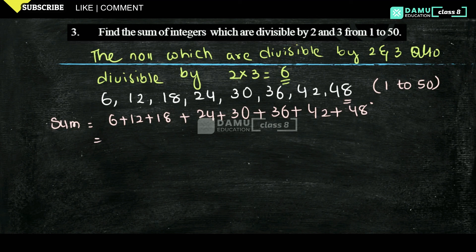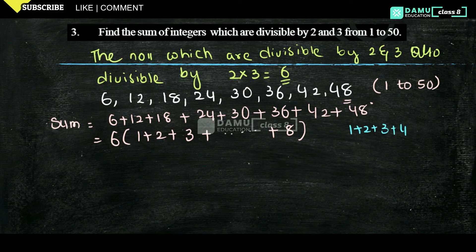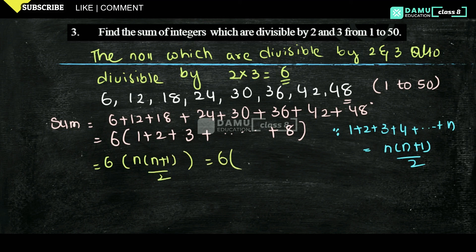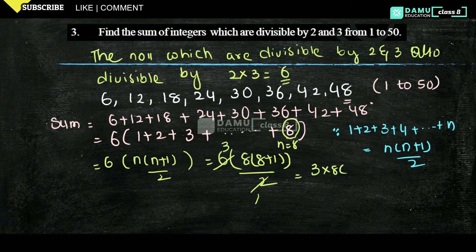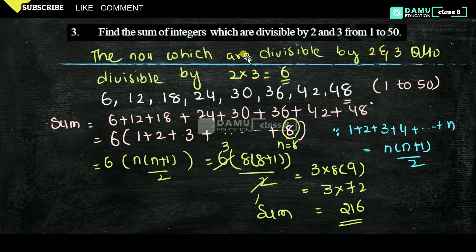Taking 6 as a common factor: 6 into (1 plus 2 plus 3 plus and so on plus 8). Using the formula for sum of n natural numbers, n equals 8, so 6 into 8 into (8 plus 1) by 2 equals 3 into 8 into 9 equals 3 into 72 equals 216. That is the sum of integers divisible by both 2 and 3 from 1 to 50.